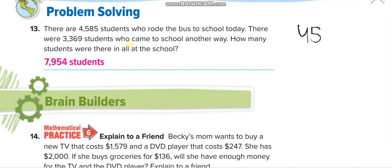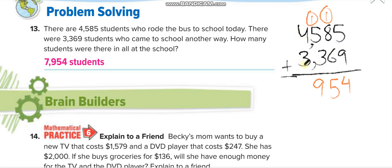4,585 and the next number down here, 3,369. You can add it easily now. 5 plus 9 is 14. 4 here, one up. 1 and 8 is 9, 9 and 6 is 15. 5 here, one up. 1 and 5 is 6, 6 and 3 is 9. And 4 and 3 is 7. So 7,954 students.